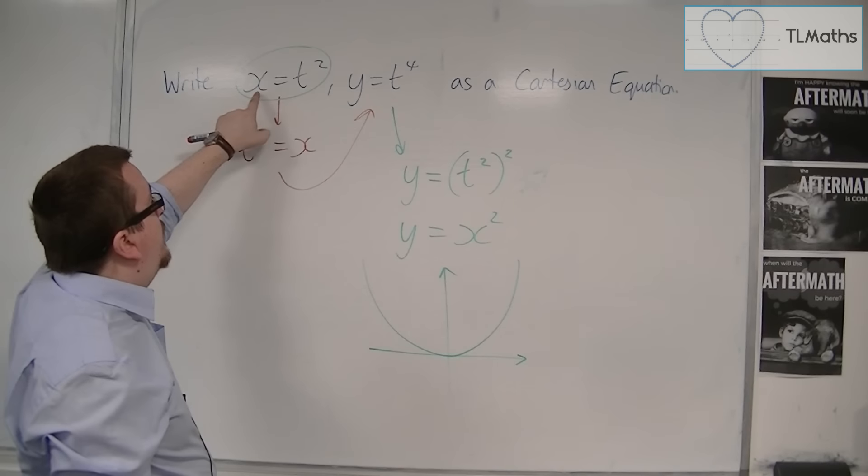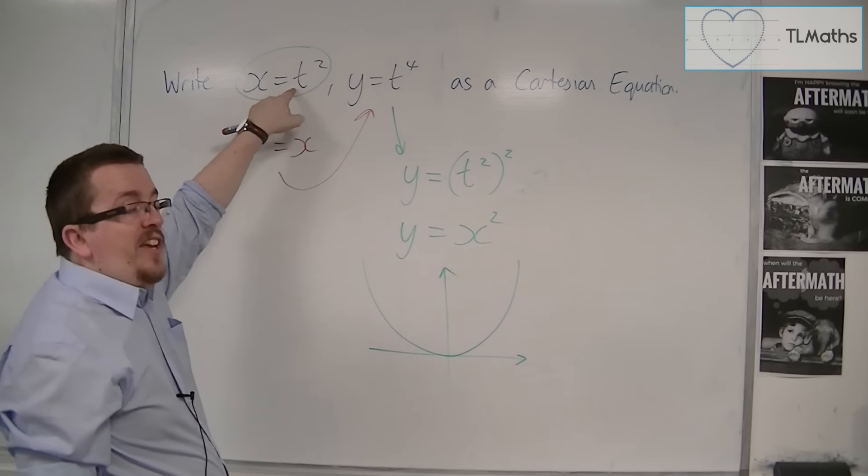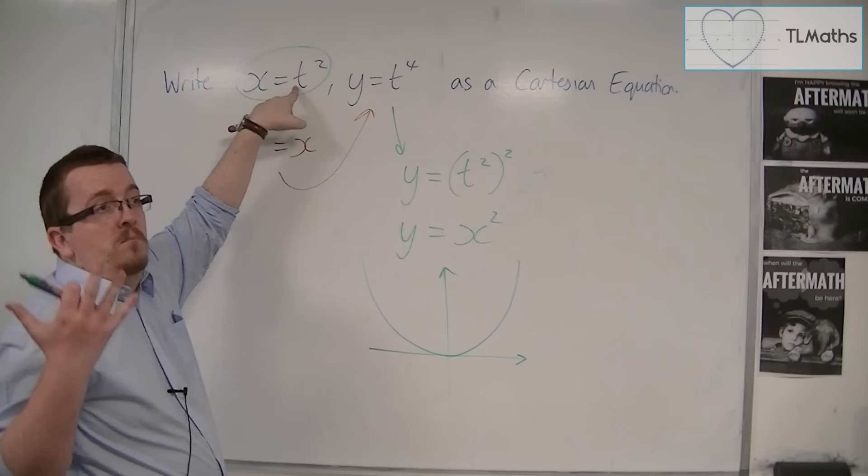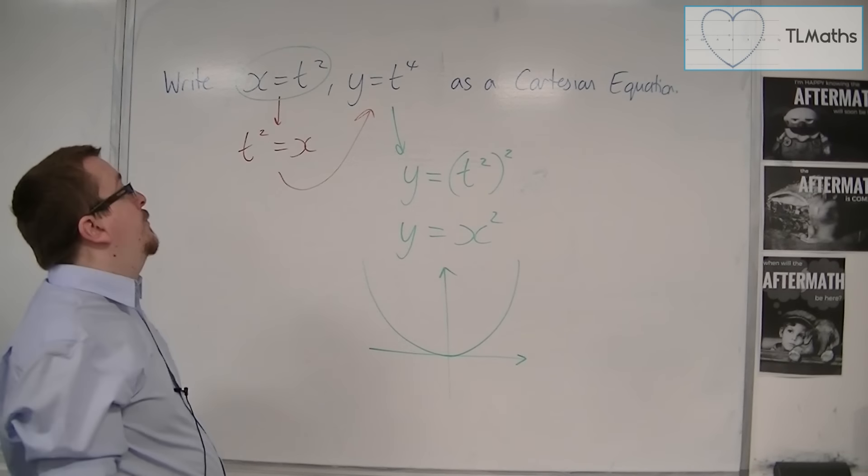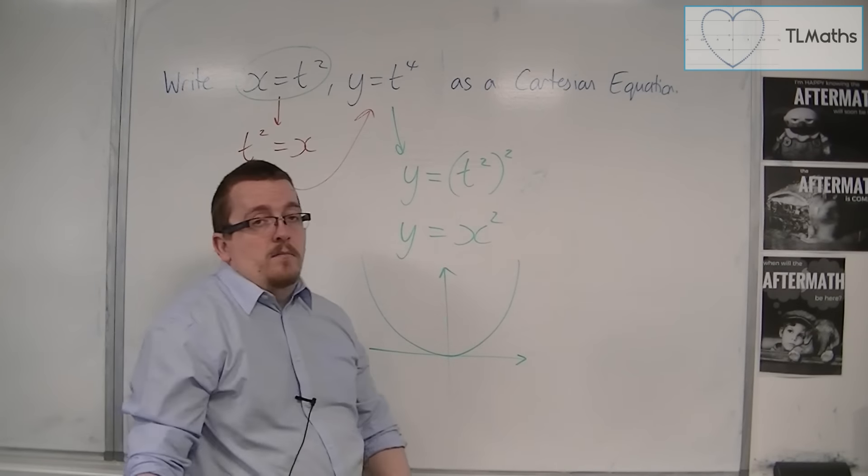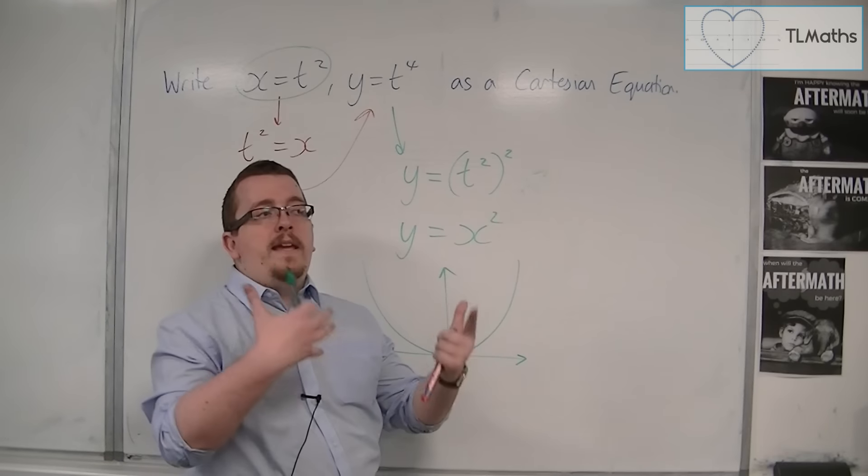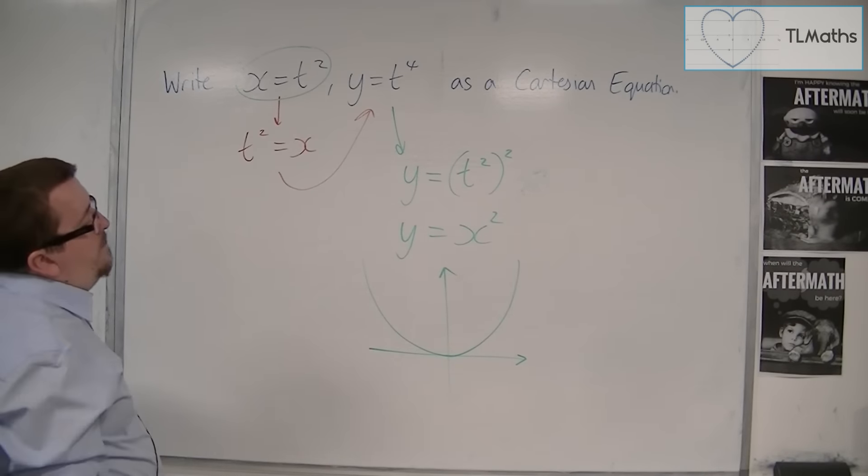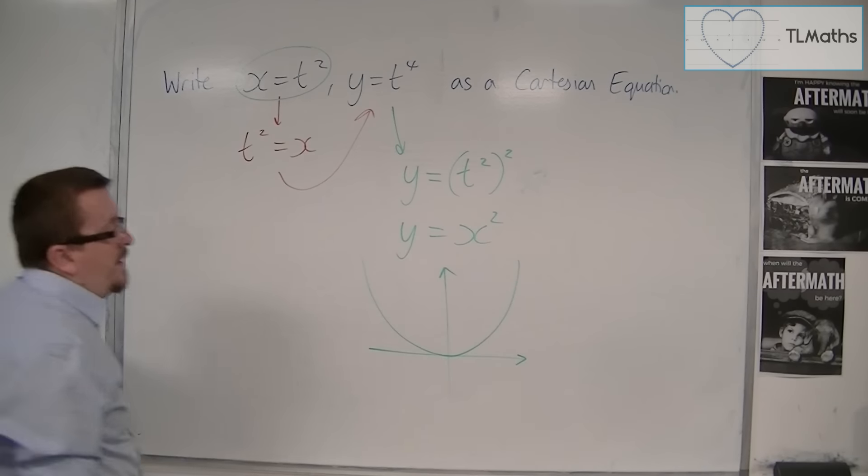Now, can t squared, if x can be negative, can t squared be negative? And the answer is no. t squared can't be negative unless t were a complex number or an imaginary number. So, that wouldn't make much sense in the context that we're looking at it.